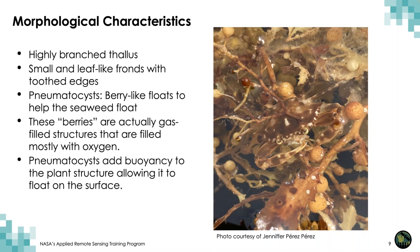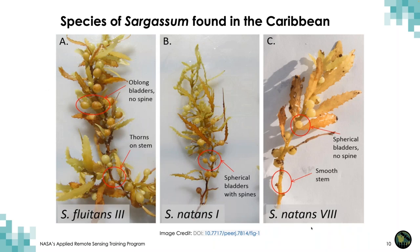In the Caribbean Sea, we find two species of sargassum: Sargassum natans and Sargassum fluitans. These two species are holopelagic, meaning they spend their whole life history floating in the ocean. Sargassum fluitans has oblong floating bladders or pneumatocysts, while Sargassum natans has spherical pneumatocysts. Within the same species of Sargassum natans, one form has spines on the pneumatocysts — that's form one — while the other form, form eight, lacks the spine. Sargassum natans has smooth stems, while fluitans has spines on the stem.